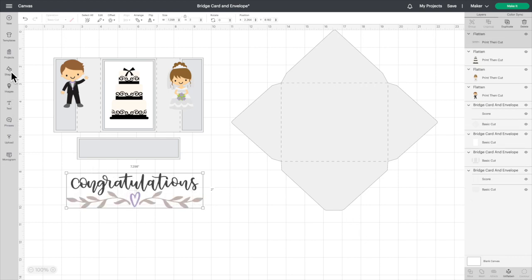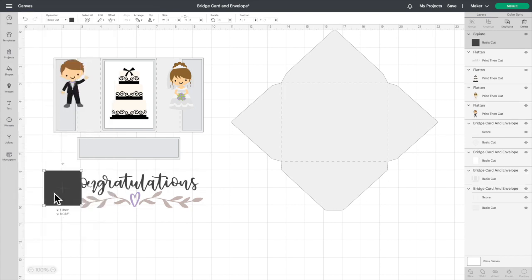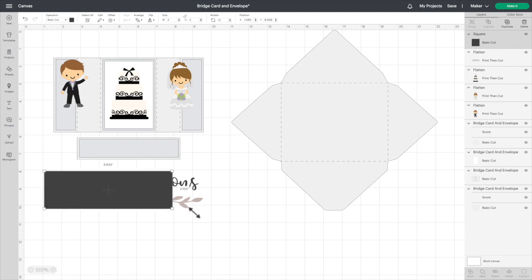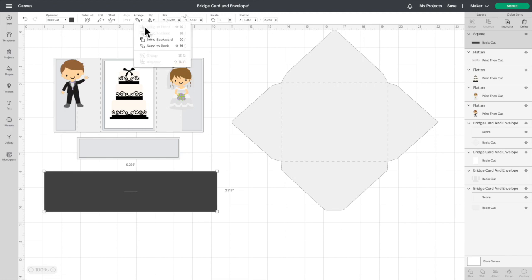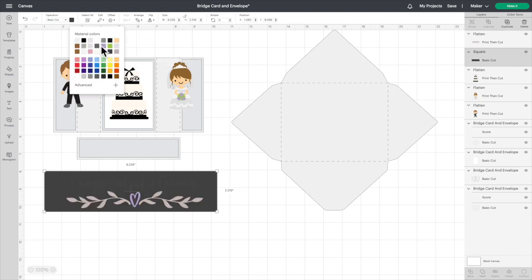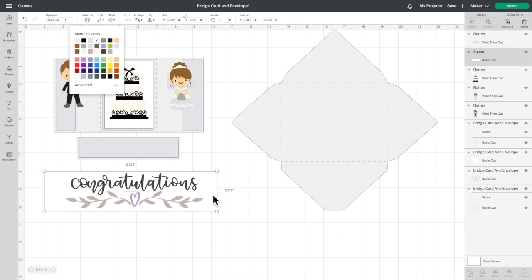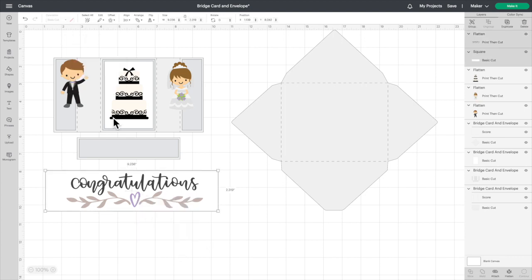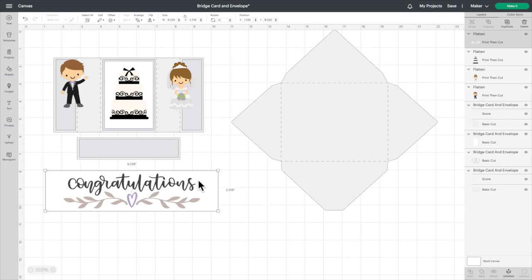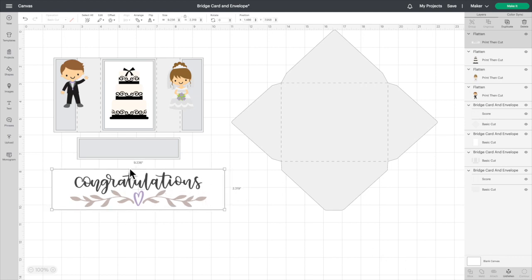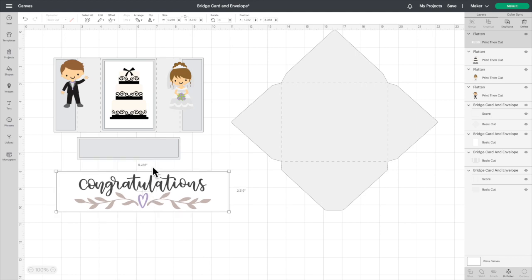Let's also get a rectangle. I'm going to send that to the back so we can see what we're doing and we're going to make it white. Let's highlight both of them, click align center, and we'll click flatten or attach, whatever you need to do. Right now that's what it's going to cut out. Now we need to resize it to fit it on our banner so we're going to unlock it.